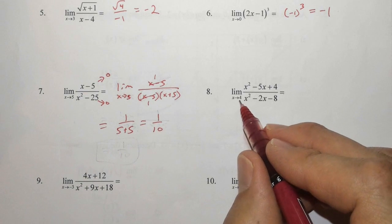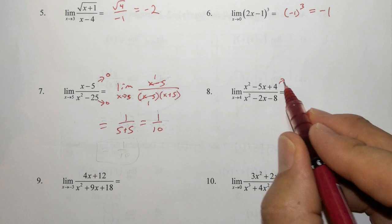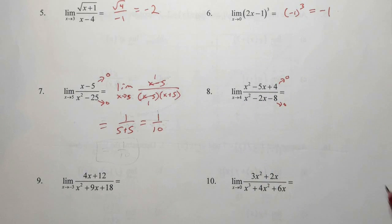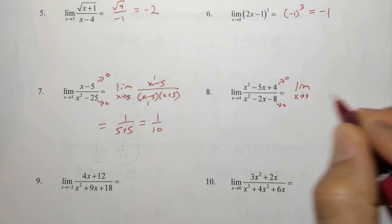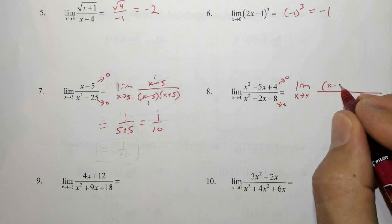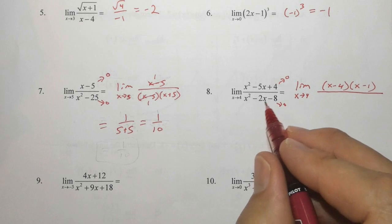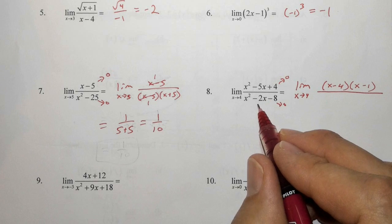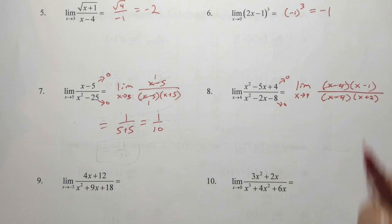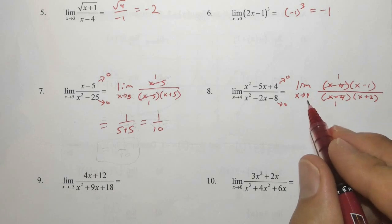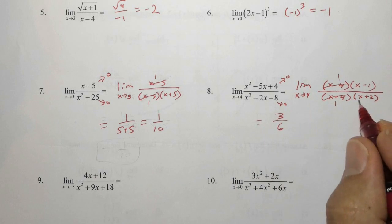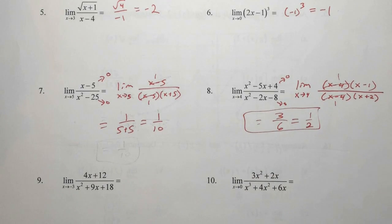Eight is more factoring. When we replace x with four, we have 16 minus 20 plus four, so the numerator goes to zero. In the denominator we have 16 minus eight minus eight, which also goes to zero. So we need to simplify. The limit as x approaches four: in the numerator, two numbers that multiply to four and add to negative five give us x minus four and x minus one. In the denominator, two numbers that multiply to negative eight with a sum of negative two give us x minus four and x plus two. We eliminate the x minus four, replace x with four, giving three in the numerator and six in the denominator, which simplifies to one-half.